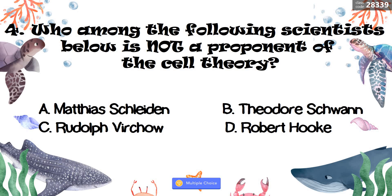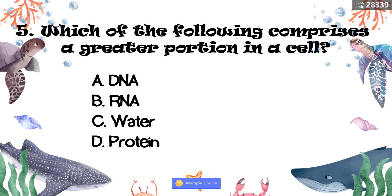Number five: Which of the following comprises a greater portion in a cell? A. DNA. B. RNA. C. Water. D. Protein. The correct answer is letter C, water.